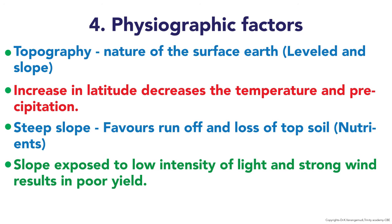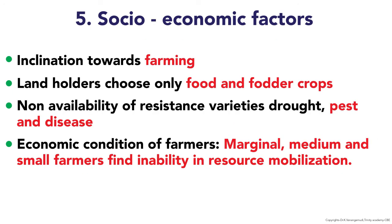Socio-economic factors are another important factor. This includes the inclination towards farming — the interest of farmers to take up farming is the major one. Landholders choose only food and fodder crops, and there is non-availability of resistant varieties for drought, pests, and diseases. The economic condition of farmers is critical, as marginal, medium, and small farmers find it very difficult in resource mobilization.